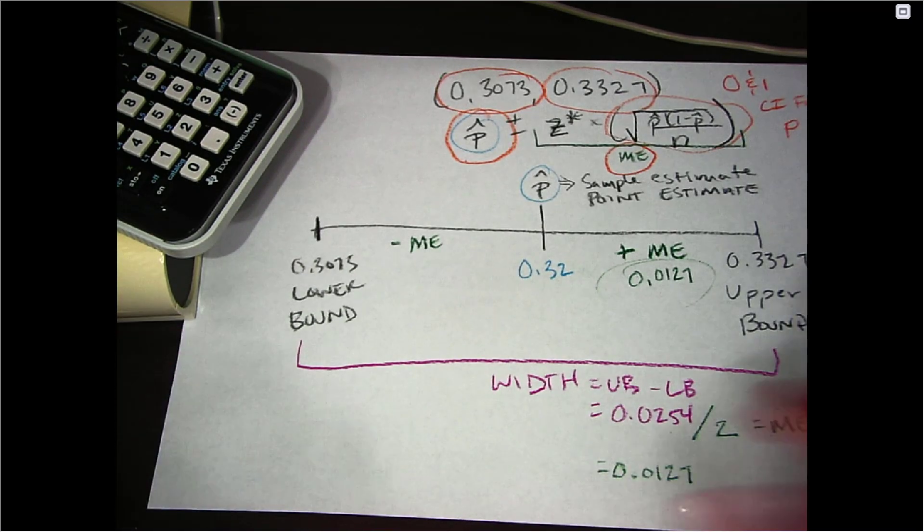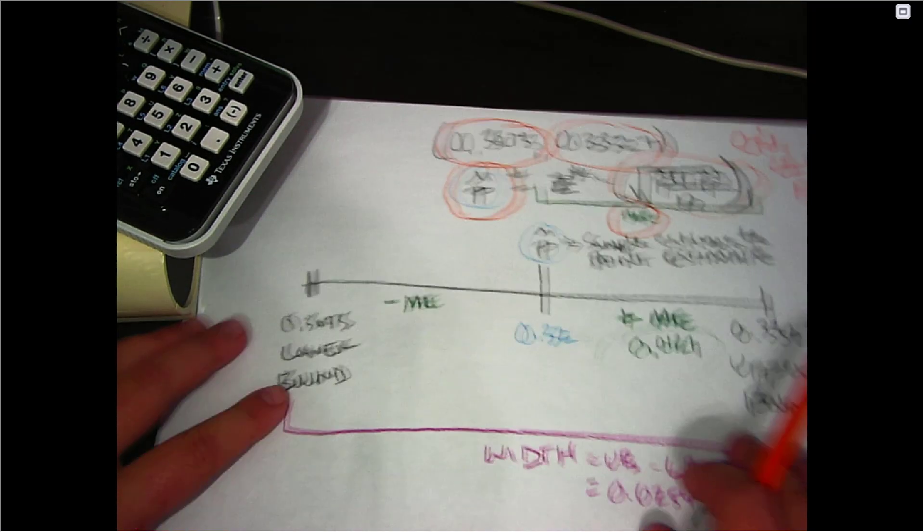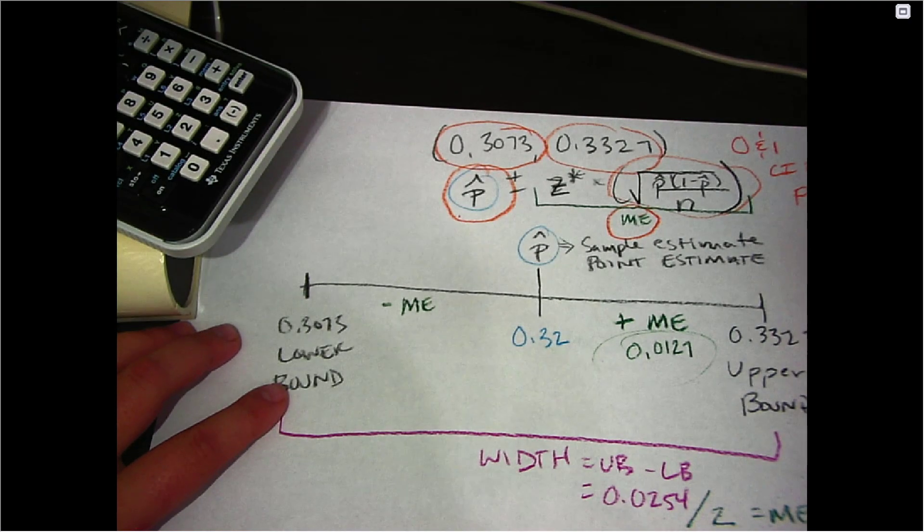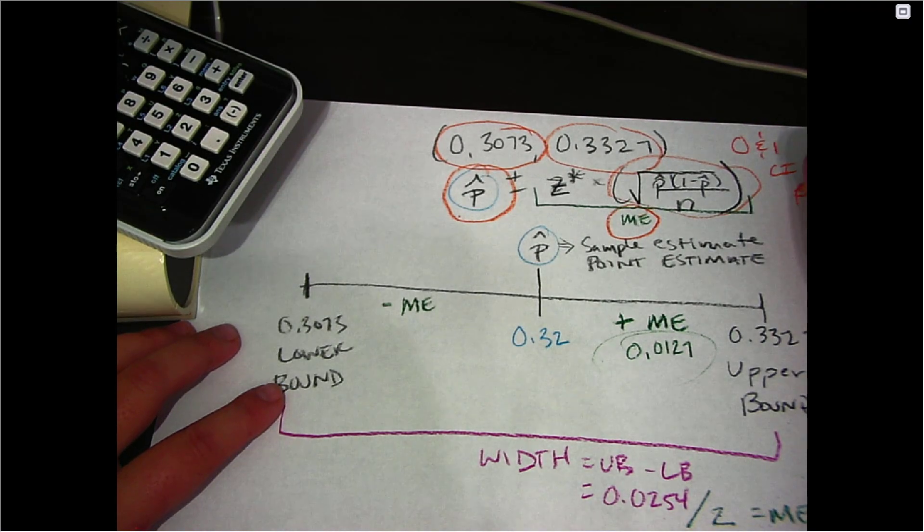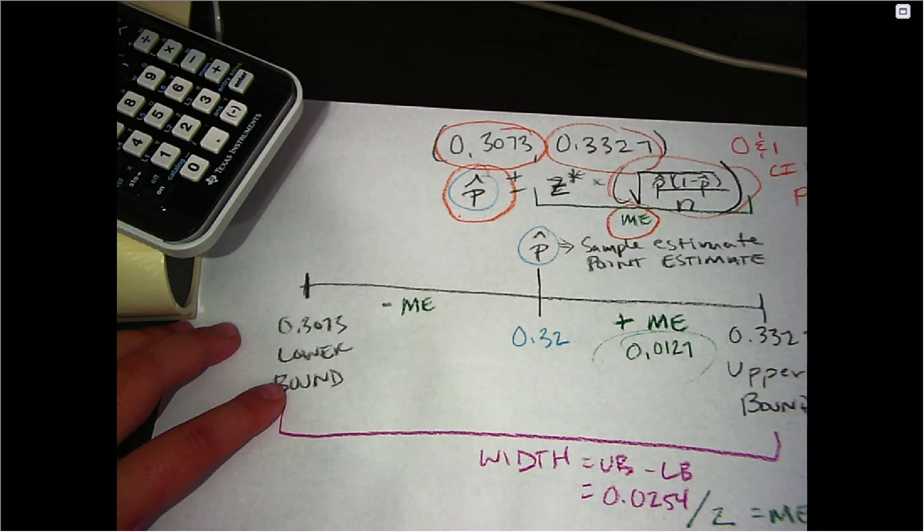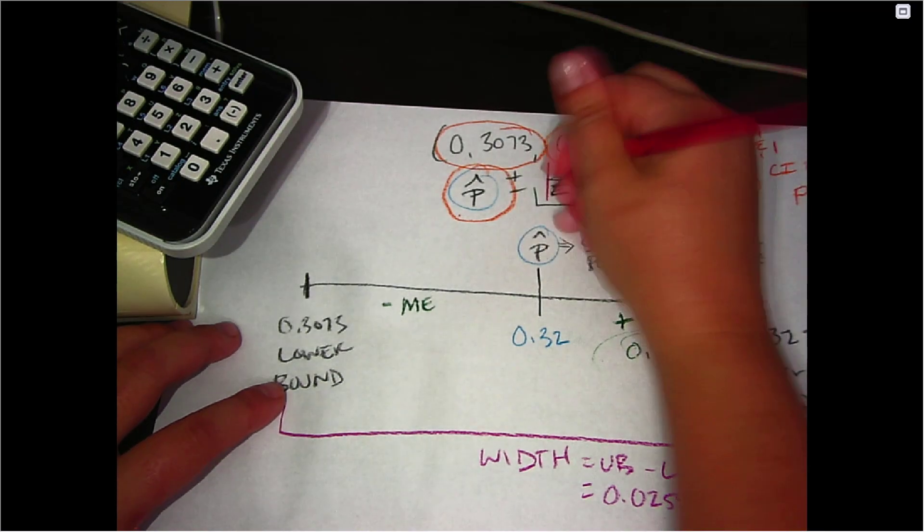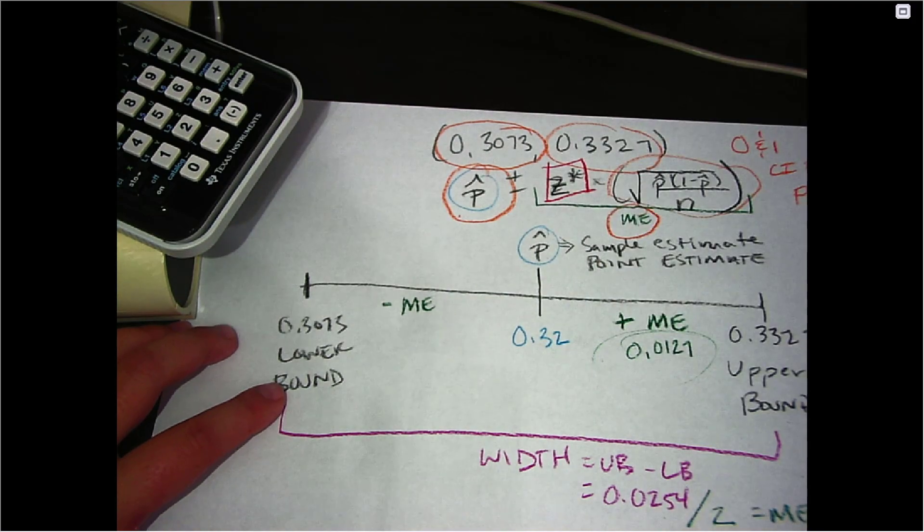If you find that these values are outside of that range, you've done something wrong, or your conditions were not met. The only value in these problems that will be outside of the 0 to 1 range is your z star multiplier.